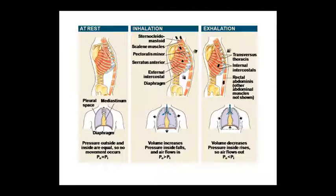The muscles involved in exhalation include the transversus thoracis, internal intercostal muscles, and rectus abdominis — other abdominal muscles are also present but rectus abdominis is highlighted here. Look at the diagram yourself showing rest, inhalation, and exhalation states of the diaphragm and intercostal muscles. All the arrows indicate directions of movement — study them to understand what changes are happening.